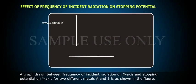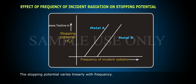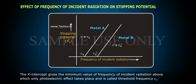A graph drawn between frequency of incident radiation on x-axis and stopping potential on y-axis for two different metals, A and B, is shown in the figure. The stopping potential varies linearly with frequency. The x-intercept gives the minimum value of frequency of incident radiation above which only photoelectric effect takes place and is called threshold frequency, nu knot.